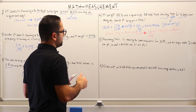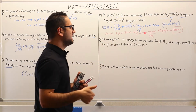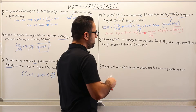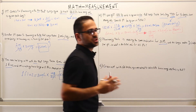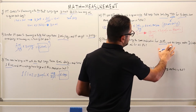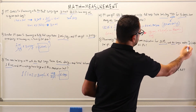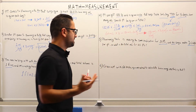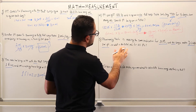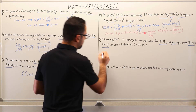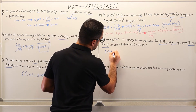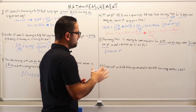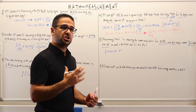In this question, a pharmacy tech is making the same medication for three patients. The prescription says make two cups per patient. So for every patient, we're making two cups. The question asks: what is the total volume in milliliters for all patients? We know we're making two cups per patient and we have three patients in total.